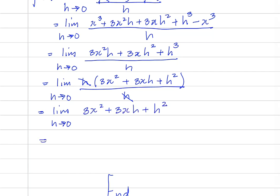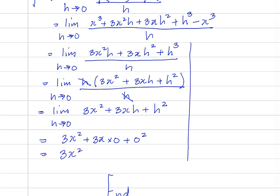By direct substitution — that is, take out h and put 0 — we have 3x squared plus 3x times 0 plus 0 squared, which is equal to 3x squared. So to finish this part of the lesson, we can say if f of x is equal to x cubed, f prime of x would be equal to 3x squared.